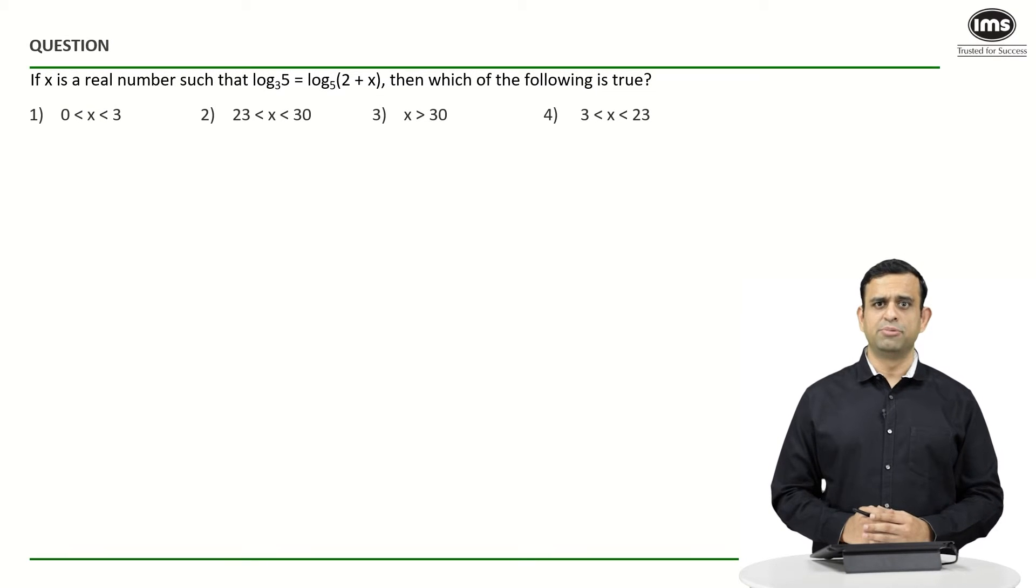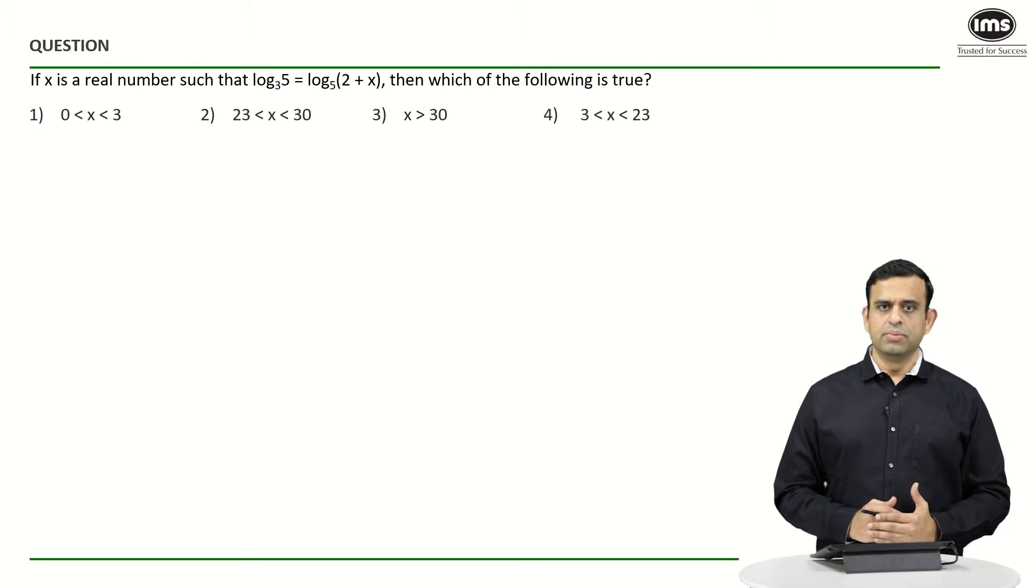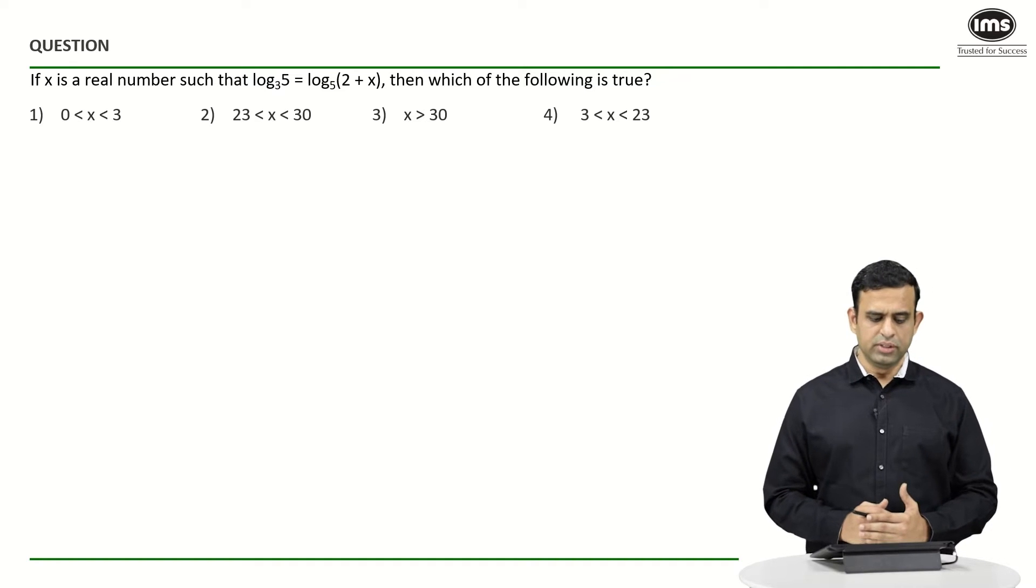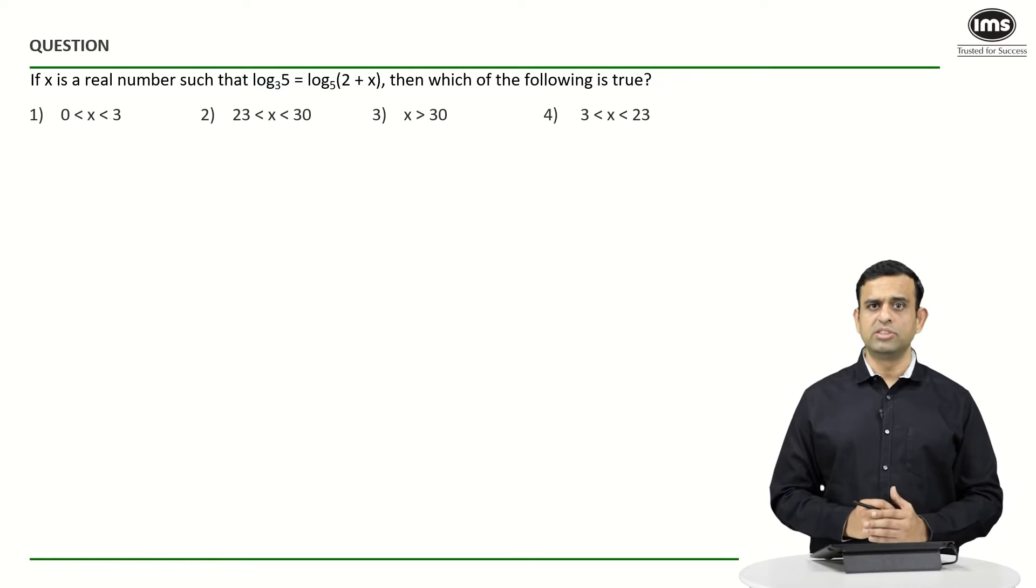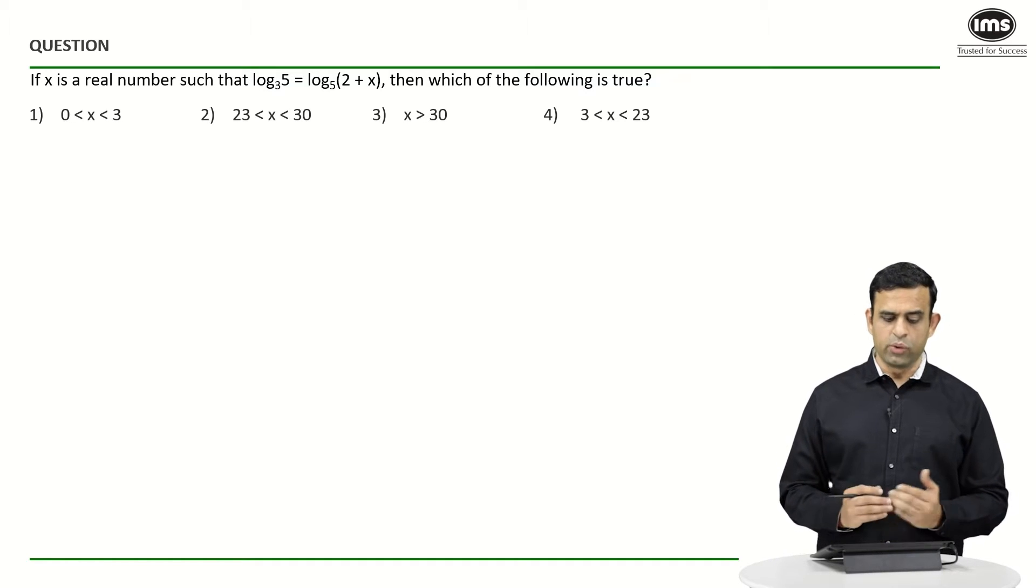Hi all, welcome to The Best of CAT Prep by IMS. Today we're going to look at questions on logarithms. Kindly give it a try, pause the video, and then resume. In this problem, it is given that x is a real number such that log of 5 to the base 3 equals log of (2 + x) to the base 5. Then which of the following is going to be true?